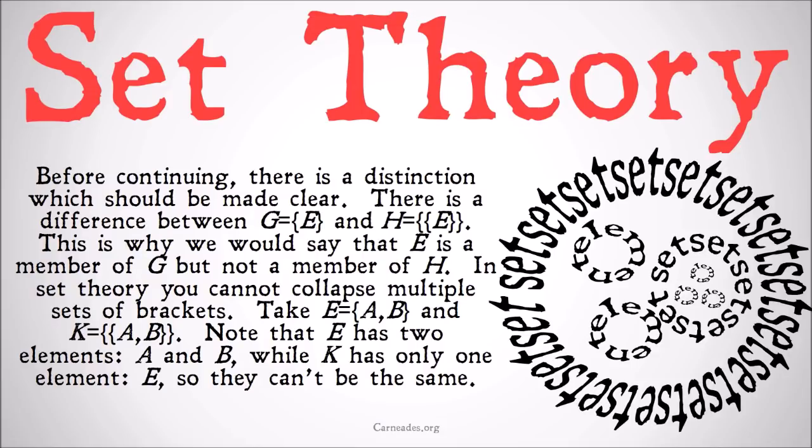There is a difference between g equals {e} and h equals {{e}}. In other words, the set g has one member and that member is e, and the set h has one member and that is the set of e.